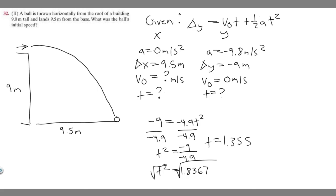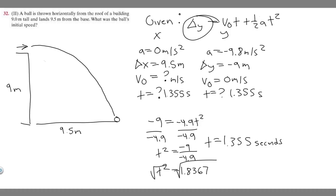So t equals 1.355 seconds — this is the amount of time it takes for the ball to hit the ground. This time value is the same for both x and y directions. Now that we've got time, we can solve for v sub zero using the x-direction equation: delta x equals v sub zero times t plus one half times a times t squared. Plugging in: 9.5 equals v sub zero times 1.355.